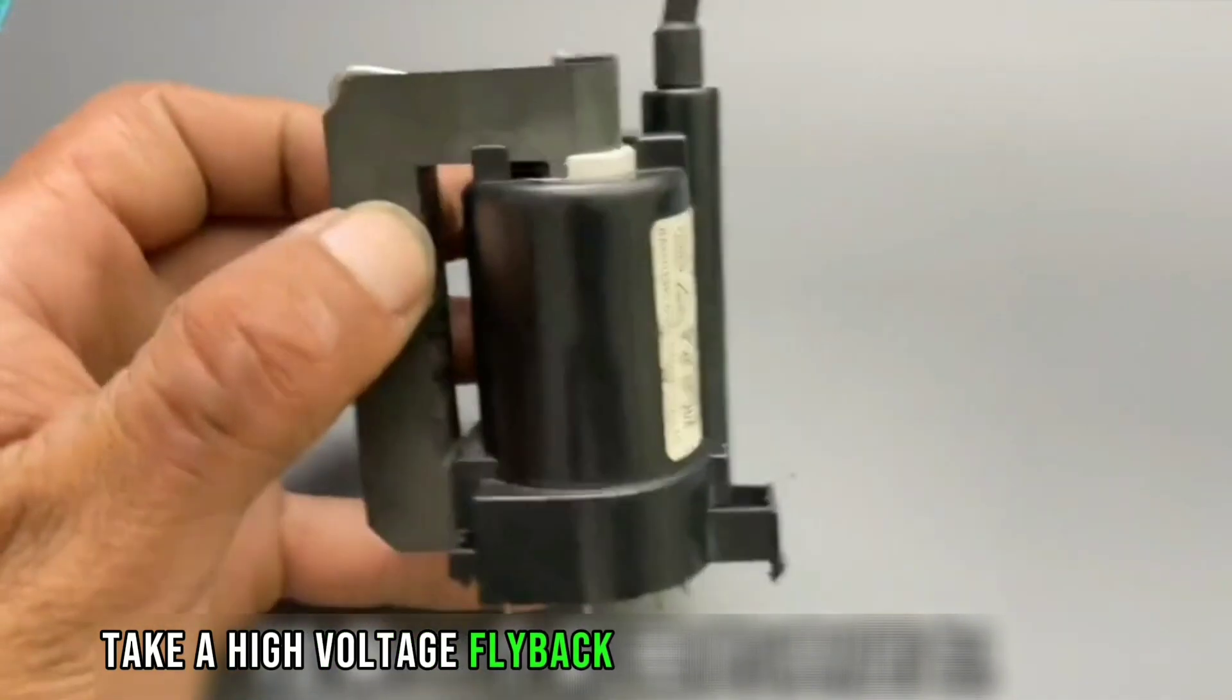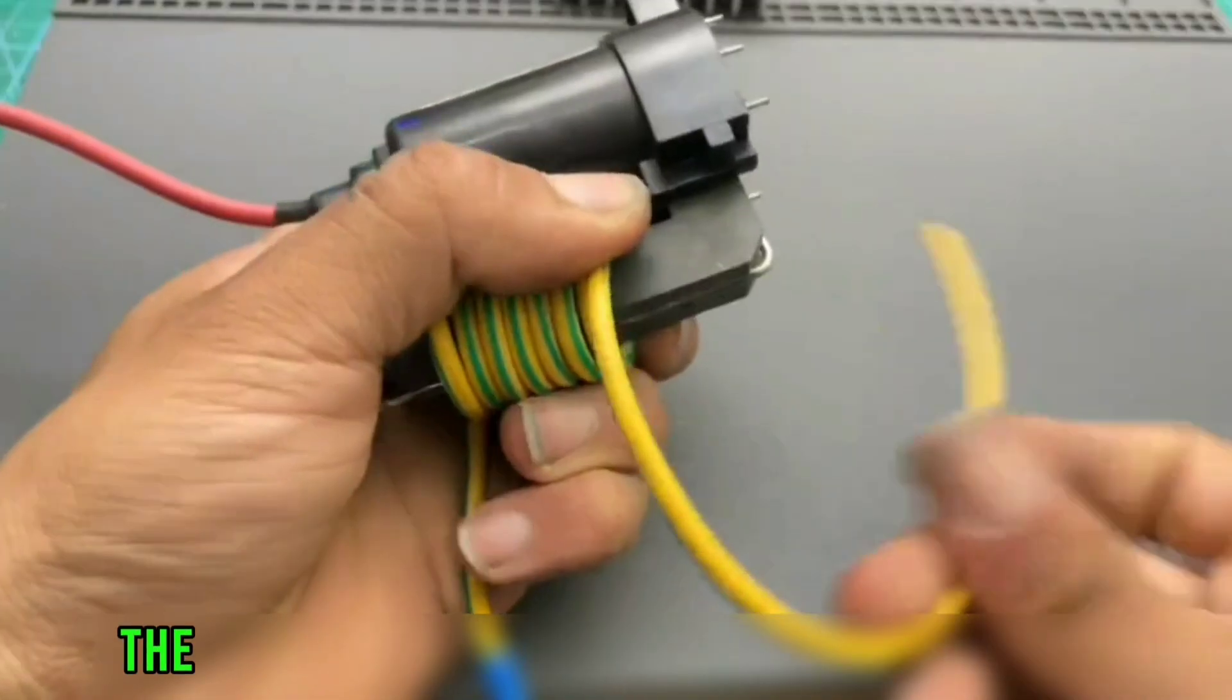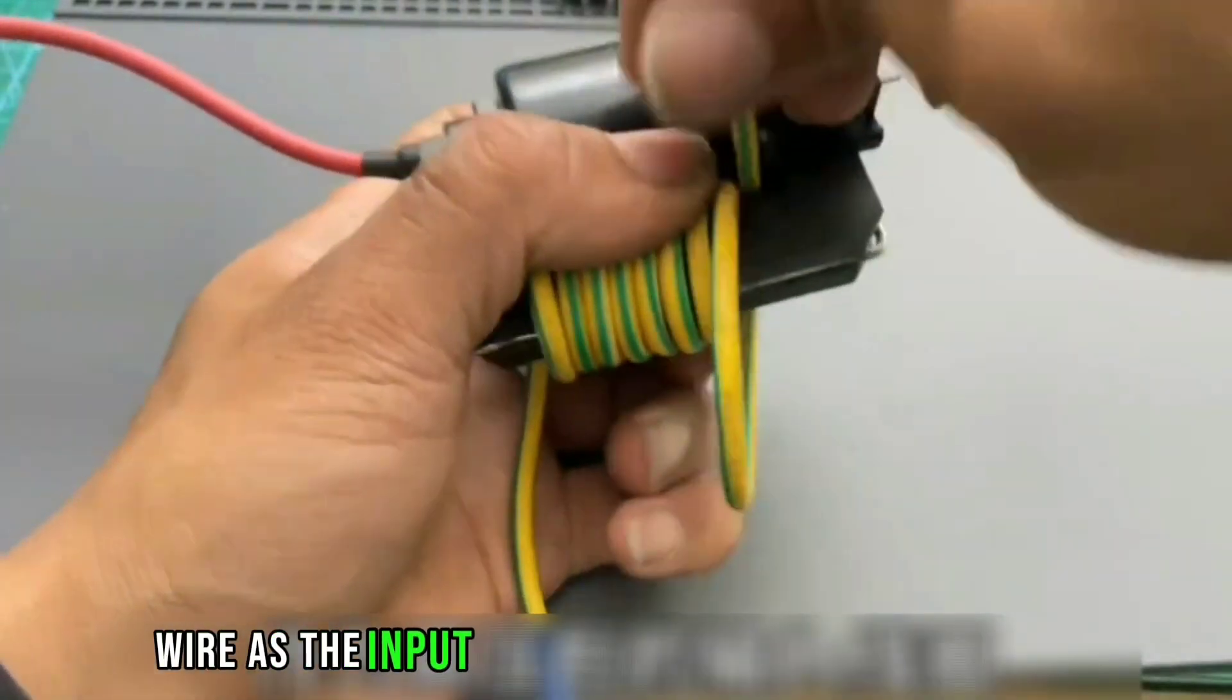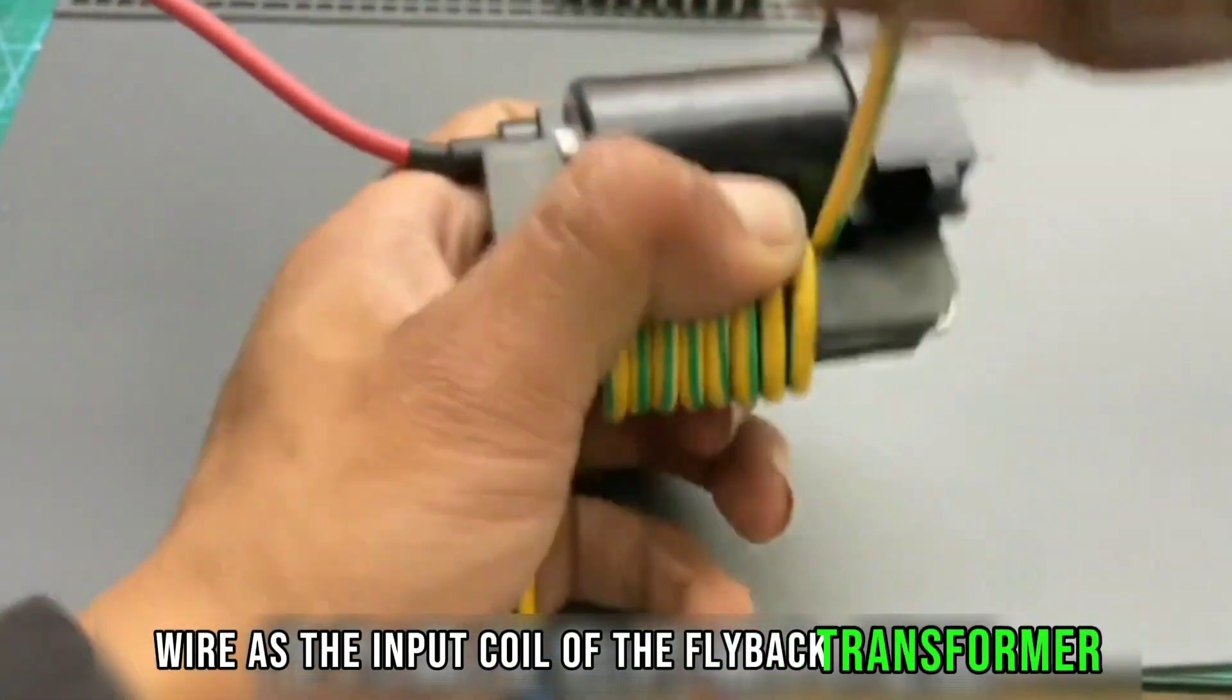Take a high-voltage flyback transformer from a color TV. The magnetic core on one side is wrapped with copper wire as the input coil of the flyback transformer.